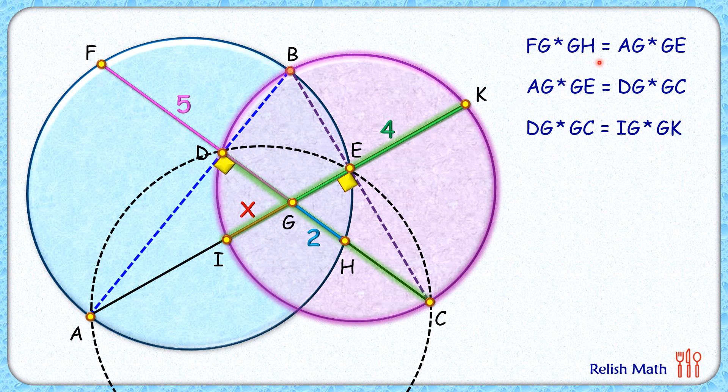Now if we add all these three equations, we will find that AG times GE is getting cancelled and DG times GC is getting cancelled. So we are getting FG times GH equals IG times GK.